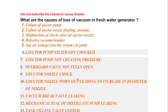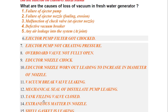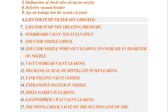Eductor nozzle choked — those previous points were regarding the ejector; this is regarding the eductor. Eductor nozzle worn out, leading to an increase in diameter of the nozzle. Vacuum brake valve leaking, mechanical seal of the distillate pump leaking, tank filling valve closed, and foreign matter or deposits in the nozzle.